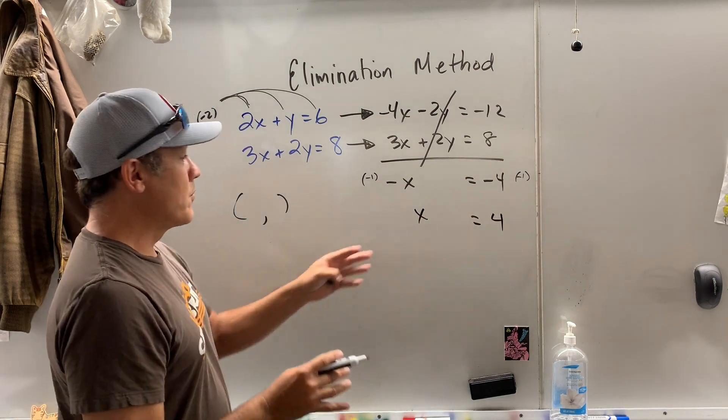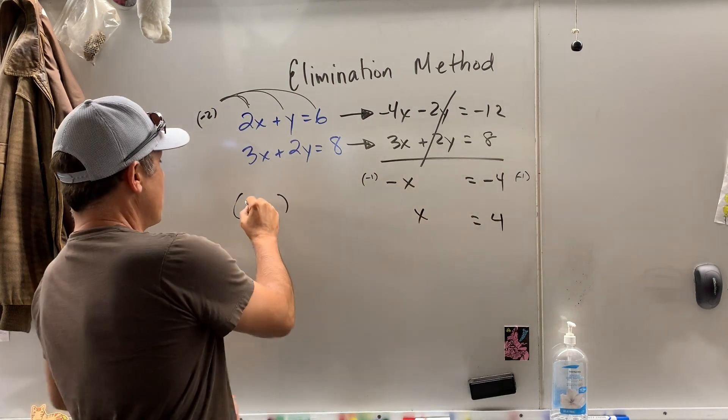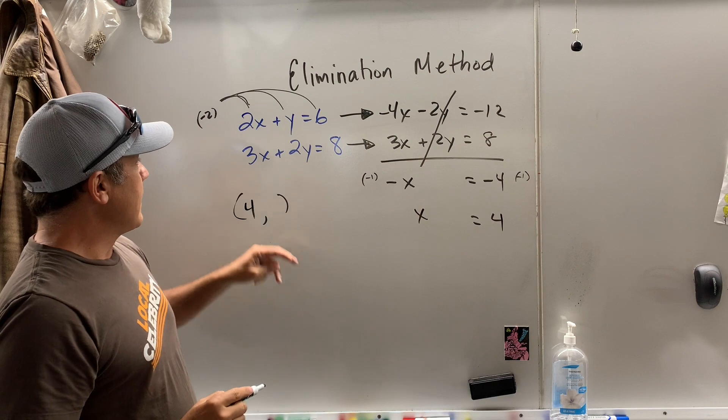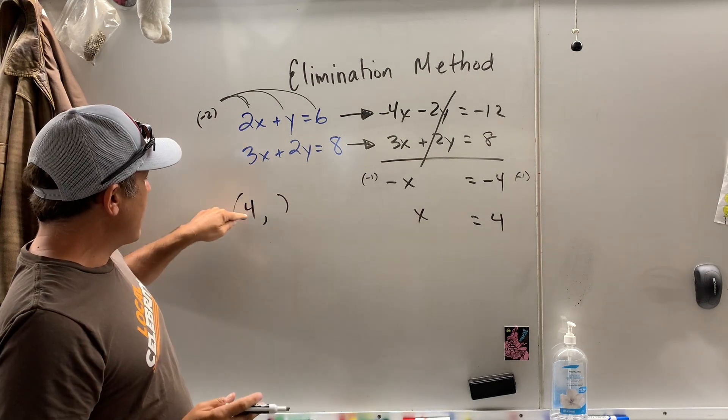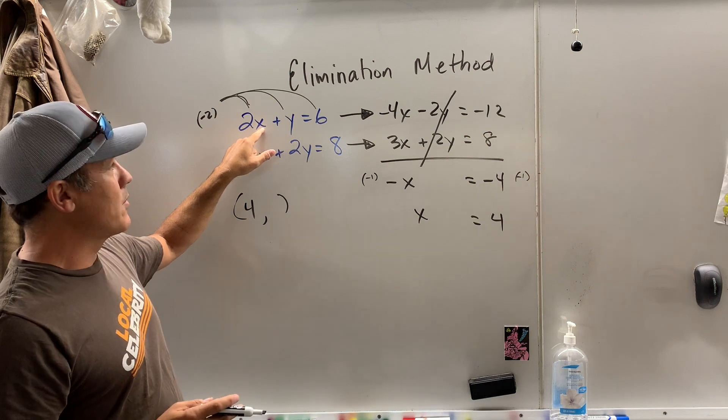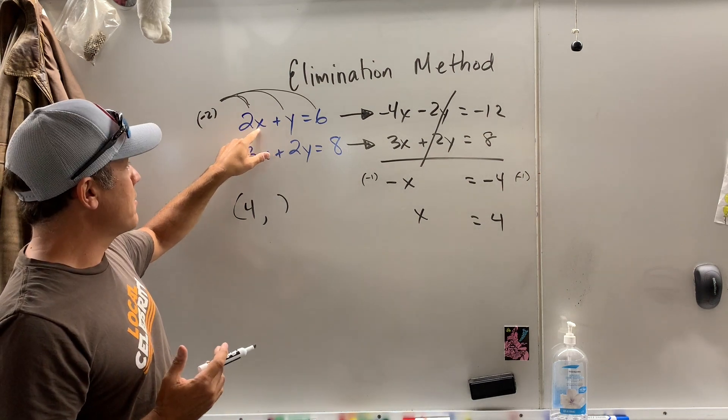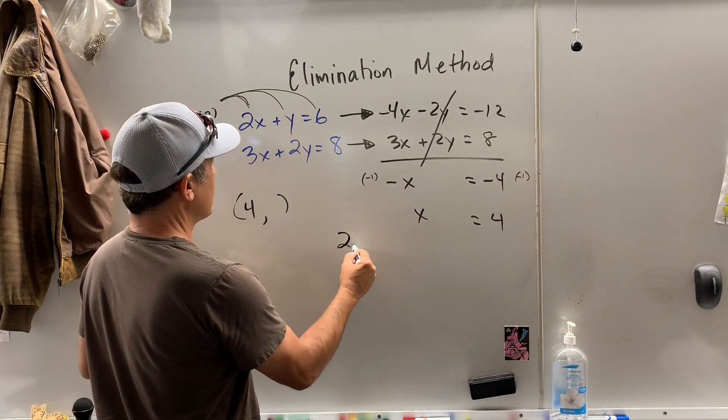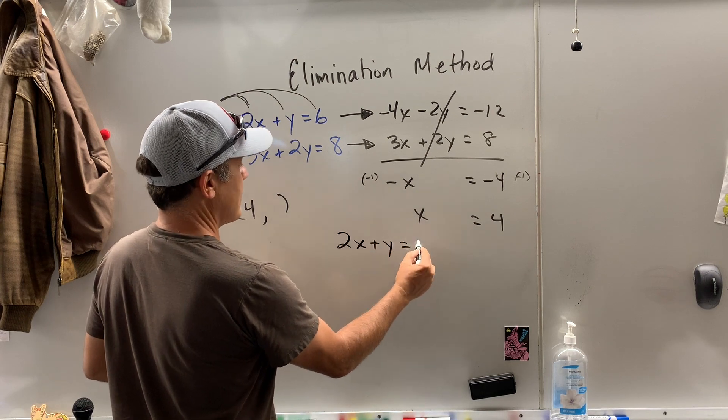Now, before you get all excited, we're only halfway done. I'm going to put 4 in there. Actually, we're more than halfway done. Now, I can take 4, and I could put it in here and solve for y, or put it in here and solve for y. I like working the easy way, so I'm going to put it in this one. Seems a little simpler.